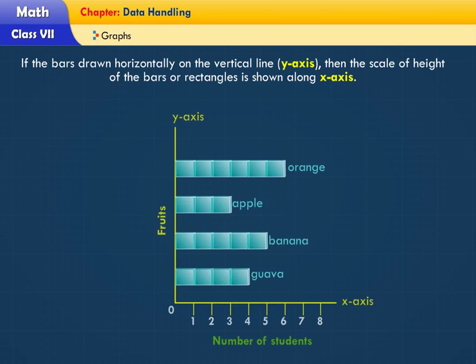If the bars are drawn horizontally on the vertical line y-axis, then the scale of height of the bars or rectangles is shown along x-axis.